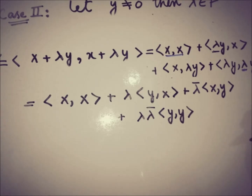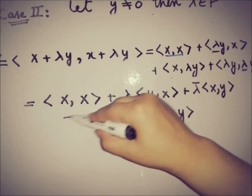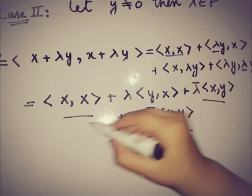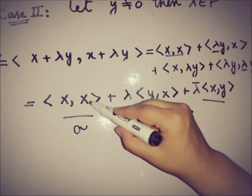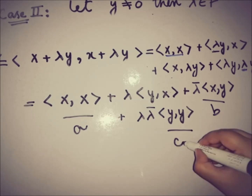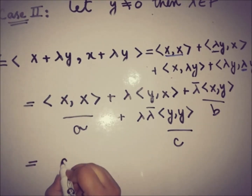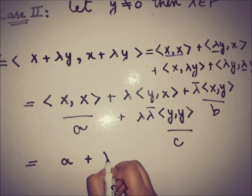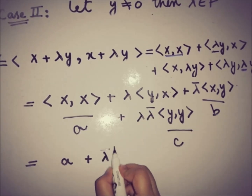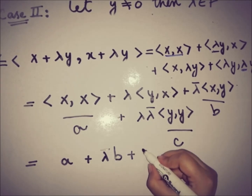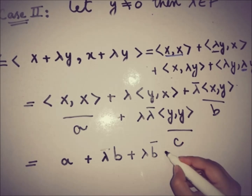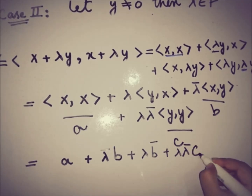To simplify, let a = ⟨x, x⟩, b = ⟨x, y⟩, and c = ⟨y, y⟩. Then we can write the expression as: a + λ̄b + λb̄ + λλ̄c, which is greater than or equal to zero by definition.